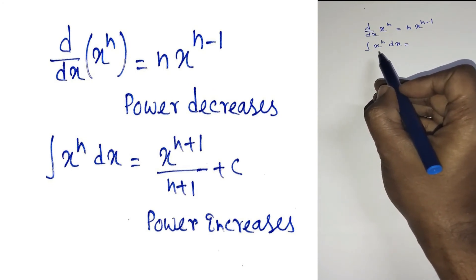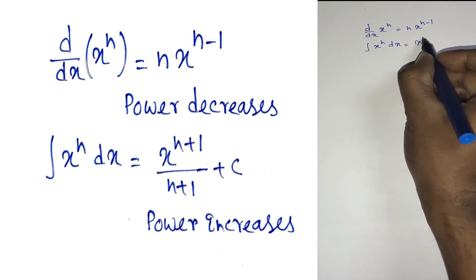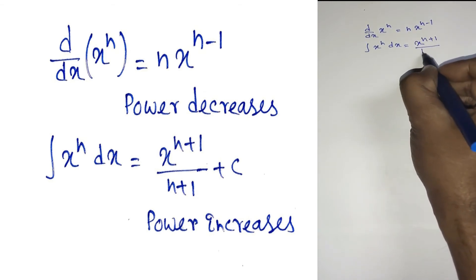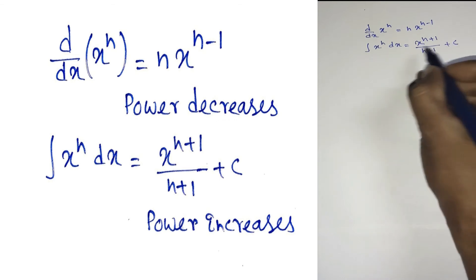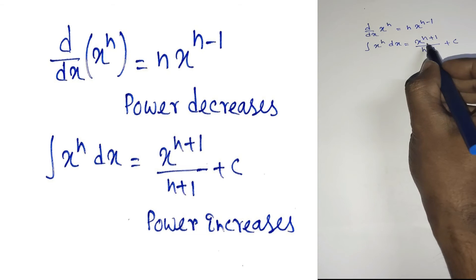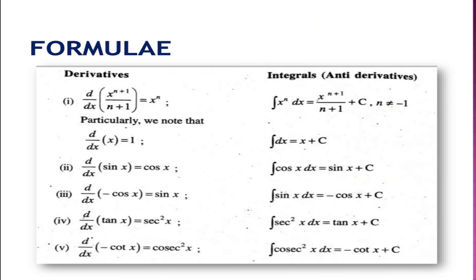If we integrate x^n, the result will be x^(n+1) and the power (n+1) will be in the denominator. For differentiation, the power decreases, whereas for integration the power increases. In the particular case, if we differentiate x with respect to x, then d/dx of x becomes 1. If we integrate 1, we get x plus the integrating constant C.